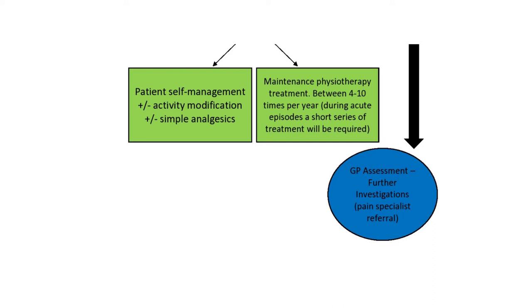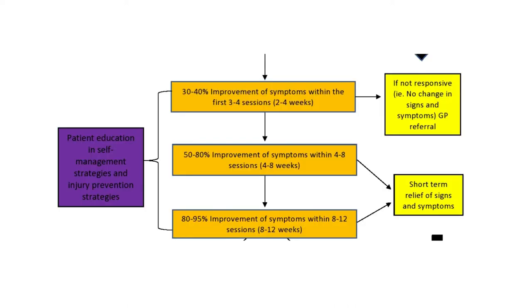The second option is maintenance physiotherapy, which can occur roughly every one to three months — approximately four to ten times per year. This keeps the tissue moving, prevents stiffening, and complements the self-treatment the patient is already doing.